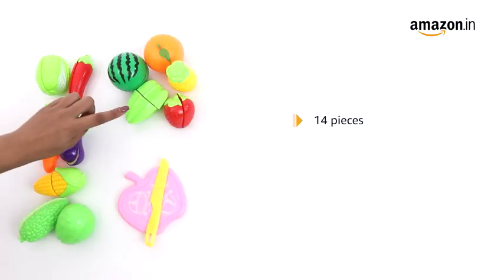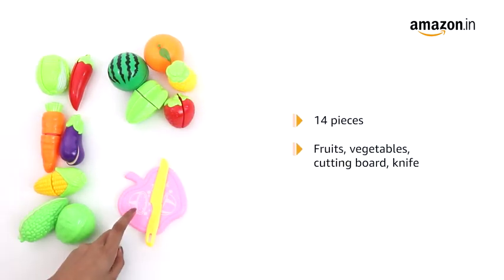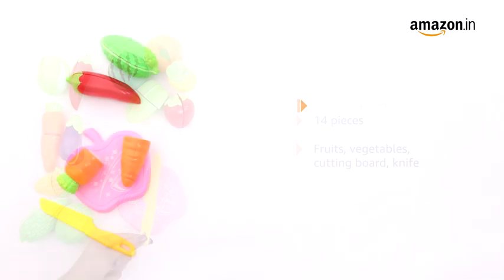The pack contains 14 pieces of fruits and vegetables along with a cutting board and a knife. The pack measures 20 by 10 by 10 cm and weighs about 250 grams.